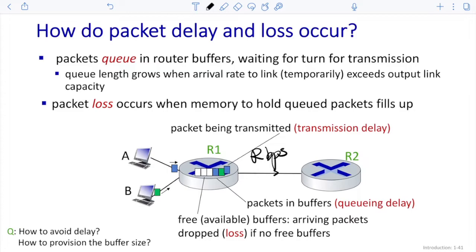Queue length grows when the arrival rate to the link temporarily exceeds the output link capacity. If the incoming rate from A and B is a little bit larger than the outgoing transmission rate — say R bits per second — and if the traffic from A and B exceeds R bits per second, then the packet will be queued at R1's buffer. That is the reason why packets experience delay — because we have to wait until the first packet is pushed out to the next hop. Packet loss occurs when the memory holding queued packets fills up, since the RAM and CPU capacity of a router is limited — you can't have an unlimited buffer.